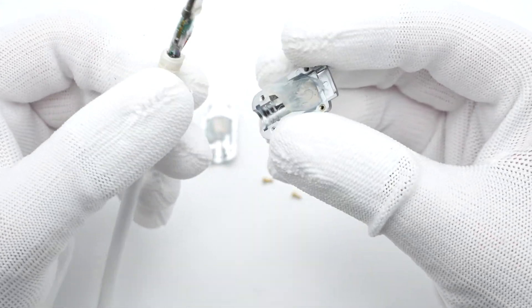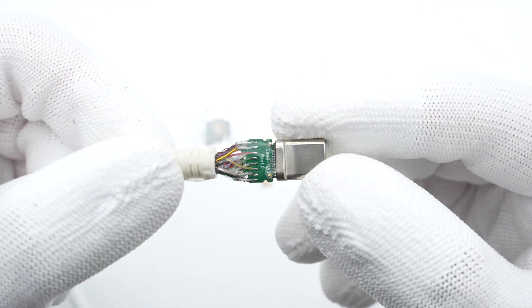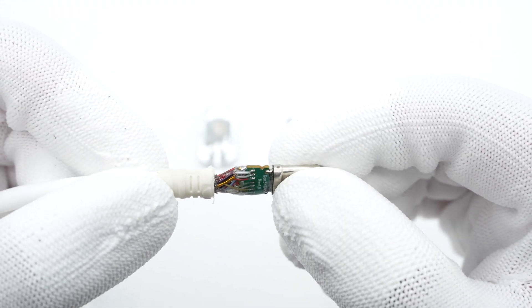All wires on both sides are soldered on the green PCB, fixed and insulated by transparent UV glue.